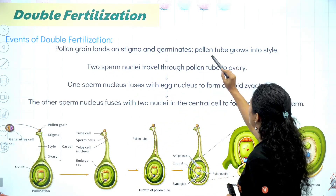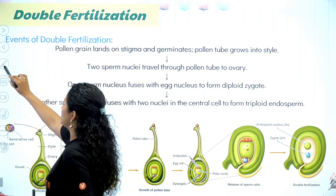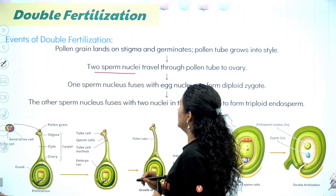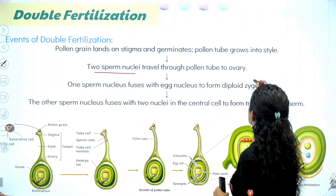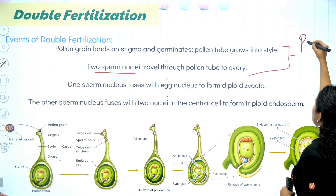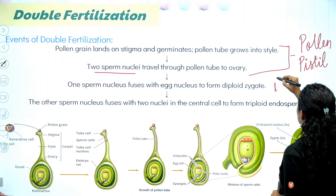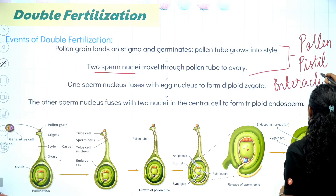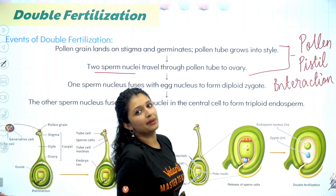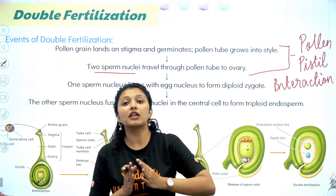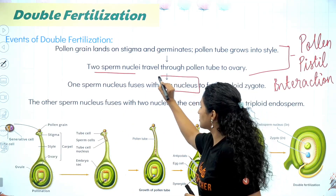Starting with: pollen grains land on stigma and germinate; pollen tube grows into the style; two sperm nuclei travel through the pollen tube into the ovary — this we have learnt in pollen-pistil interaction. Now, we have two sperm nuclei, two male gametes, and they have different functions.